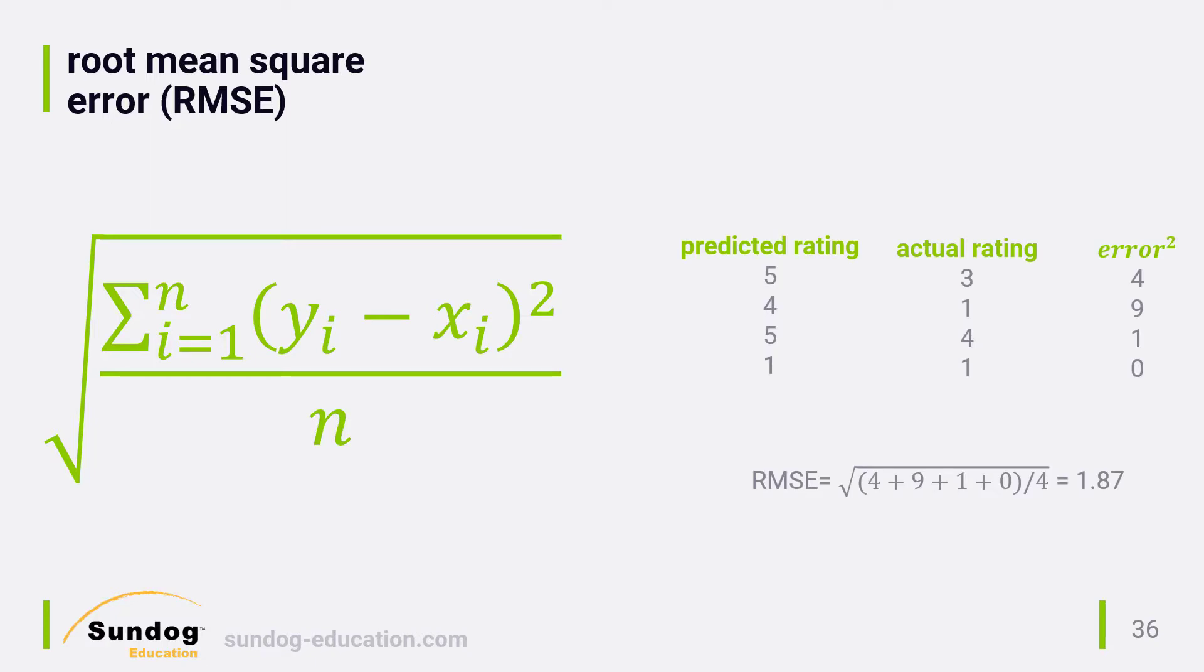Let's walk through that same example. In the first rating in our test set, the error between the predicted rating of 5 and actual rating of 3 is 2, and the square of that error is 4. We just keep doing that for each rating in our test set and add them all up. Then divide by the number of ratings, take the square root, and this time we end up with 1.87.